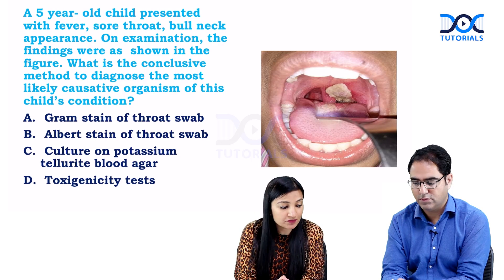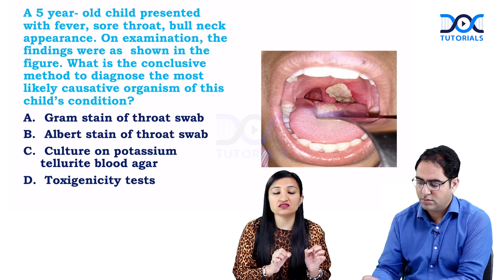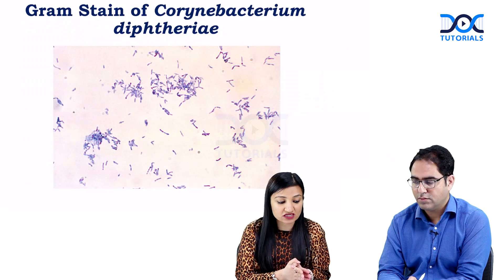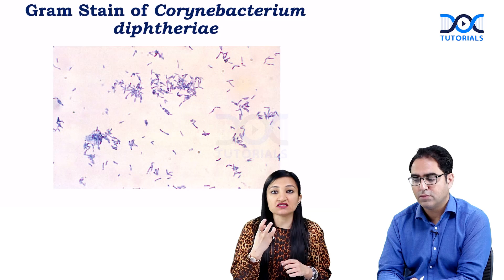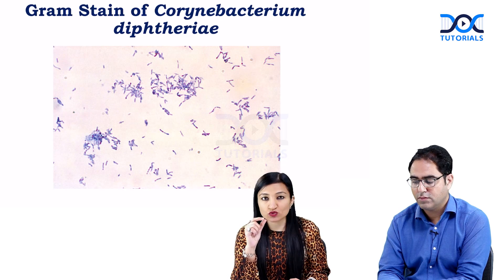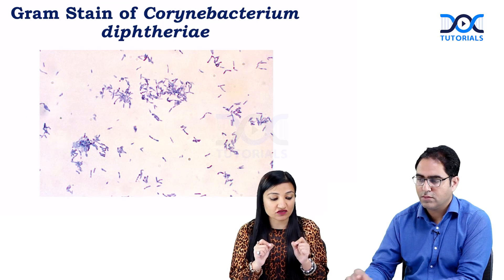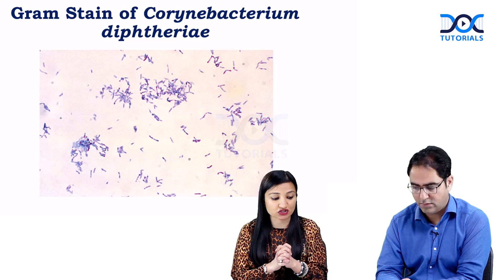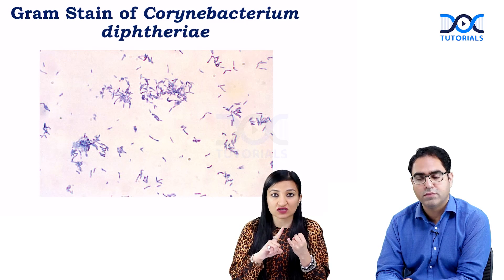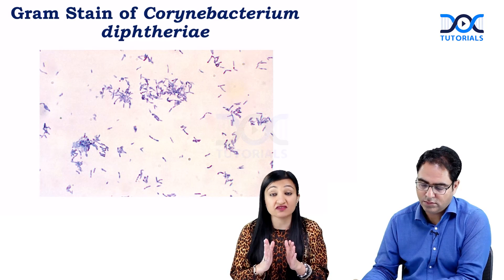Option A says Gram stain of throat swab. Gram stain is not going to help us much because both the toxigenic strains and the non-toxigenic strains of C. diphtheriae are going to be smear positive. As you can see in this picture, we have a Gram stain smear of Corynebacterium diphtheriae — it's a Gram-positive organism. The word 'Coryne' means club-shaped, referring to the bulbous swellings at the ends. Gram-positive rods arranged in a Chinese letter or cuneiform arrangement are seen, due to failure of separation of daughter cells during binary fission. So Gram stain will be positive for both toxigenic and non-toxigenic strains — we can't confidently conclude the patient is infected with a toxigenic strain.